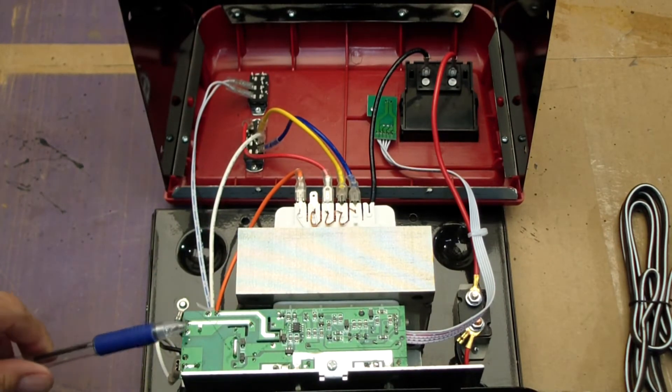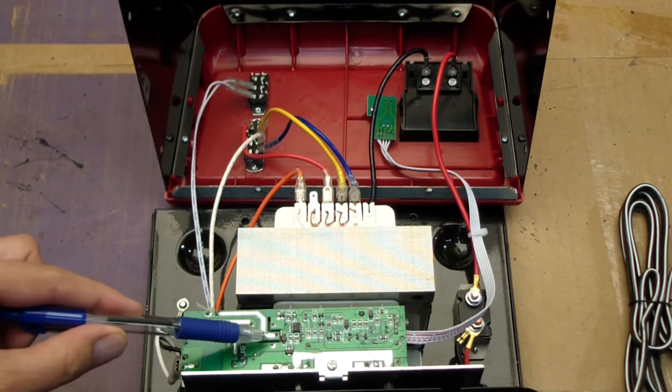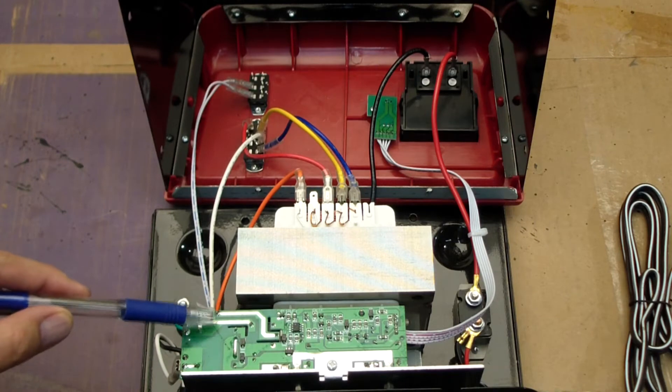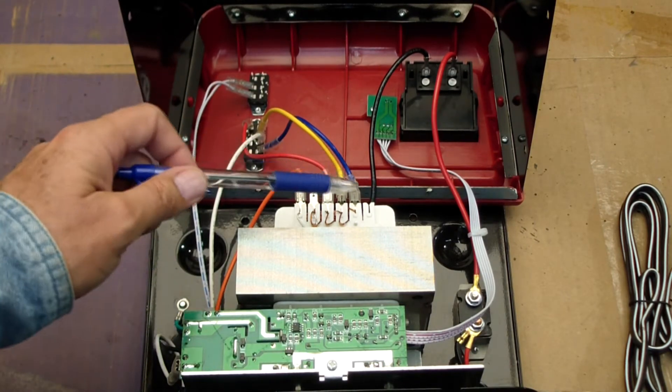The AC power comes in over here and here, and then it goes through a relay. There's a relay that turns this thing on to turn the AC on. This is the primary here, and it has various different taps.